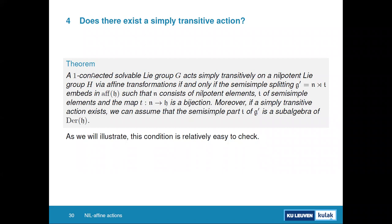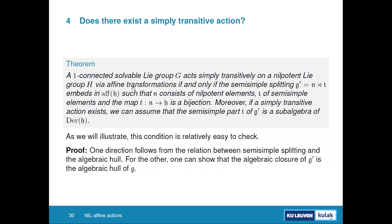The most important theorem: given G and H, there exists a simply transitive action if and only if there is an embedding of the semi-simple splitting into the affine transformations, where N embeds as nilpotent elements and T embeds as semi-simple elements, and the T-map is a bijection. Moreover, if such an action exists, you can assume T lies in the derivations of H. The proof uses the tight relationship between the semi-simple splitting and the algebraic hull.